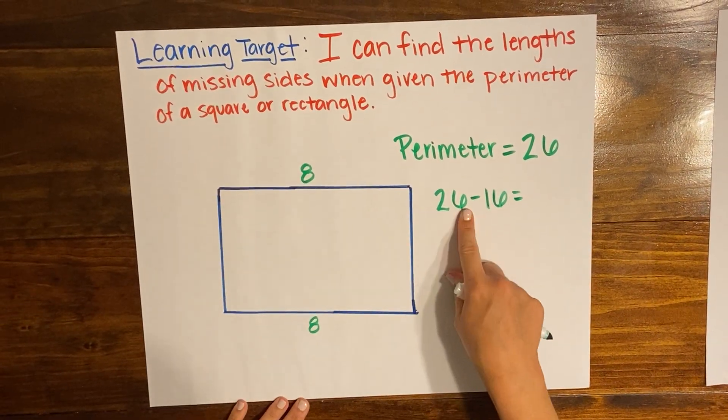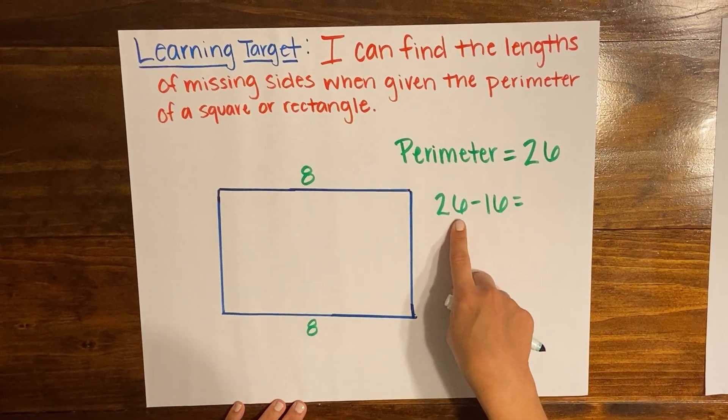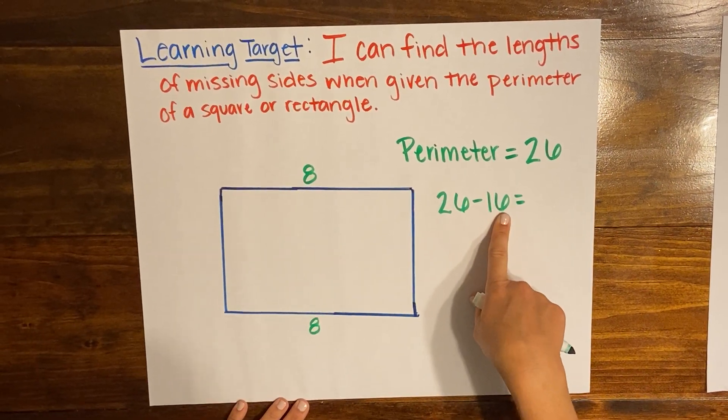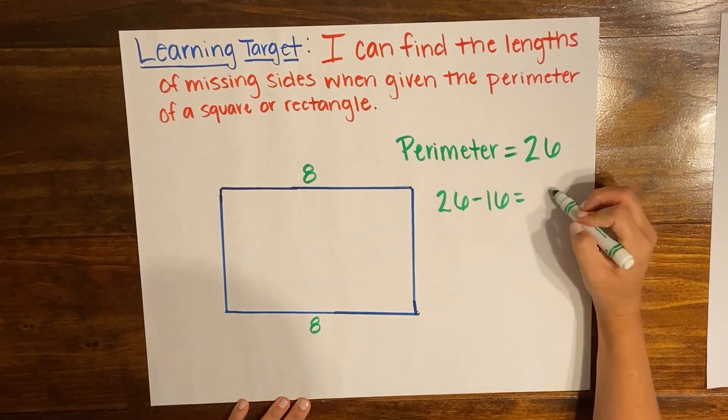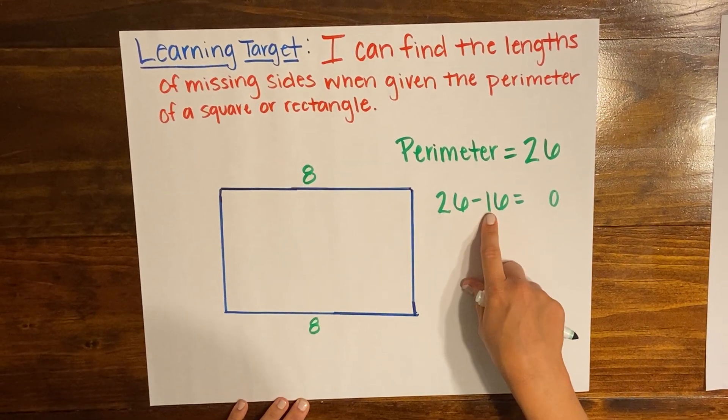So if I have 26 and I take away 16, if I'm looking at the ones place I know that I have 6 ones and I'm gonna take away 6 ones, so that's gonna leave me with 0 ones. And if I'm looking at my tens place I have 2 tens and I'm taking away 1 ten, that's gonna leave me with 1 ten.